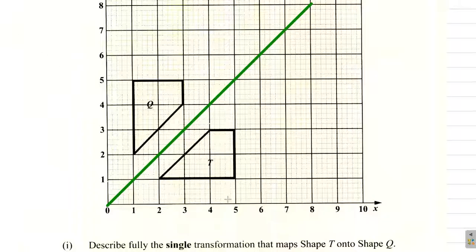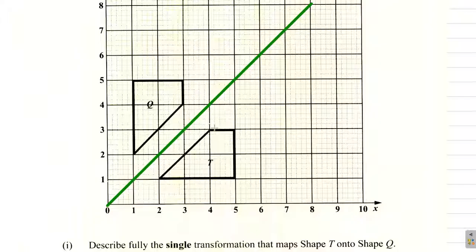Maps T onto Q is a reflection in this line. If you consider this green line here as your mirror line, and you reflect T, what you would see is Q.